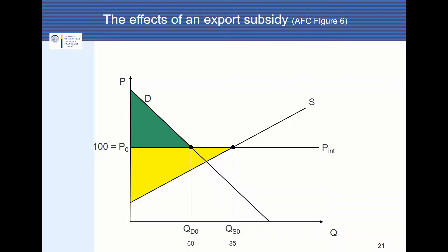What about consumer surplus in this scenario? It is the area above the price line and below the demand relationship — the green area symbolizes consumer surplus and the yellow area symbolizes producer surplus.